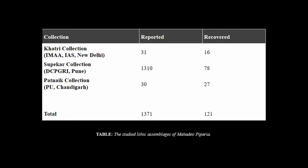The Supekar collection is from both excavated context — excavations in 1963 and 1965 — as well as surface collections. Unfortunately, when we visited the repository, out of 1,300 artefacts only 78 could be recovered; nobody knows where the rest are. The 78 were fortunately recovered because they were in another site, not even labelled Madhya Pipriya. This giant discrepancy will unfortunately bias this study.